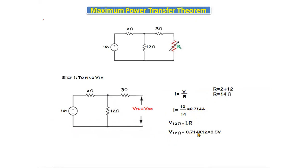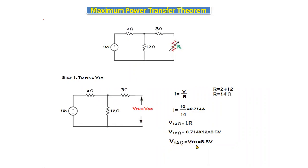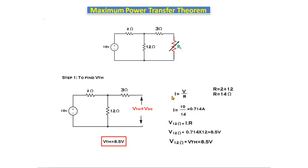The current I equals 0.714 amperes. Voltage across the 12-ohm resistor equals 0.714 into 12, which gives 8.5 volts. Since there is no voltage drop across the 3-ohm resistor, the voltage across the open-circuit terminal equals the voltage across the 12-ohm resistor. Therefore, Vth equals 8.5 volts.